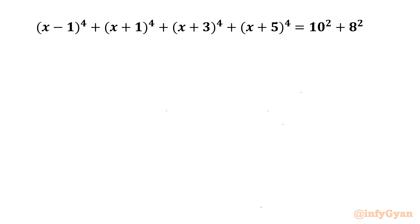Welcome back to Infigyan, my dear friends. Today in this video we are going to solve one very interesting algebraic challenge. It is (x−1)⁴ + (x+1)⁴ + (x+3)⁴ + (x+5)⁴ equal to 10² + 8². We have to find out all four solutions.